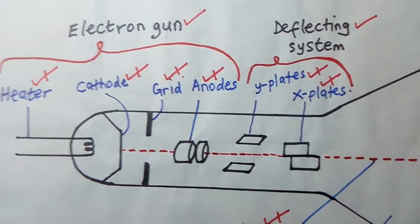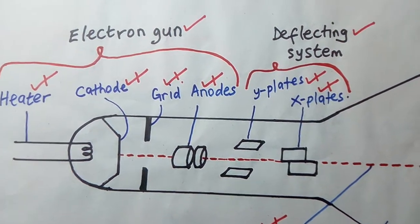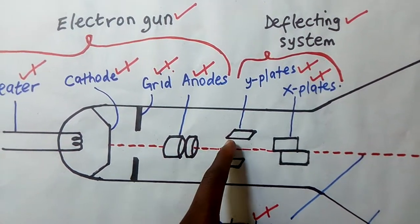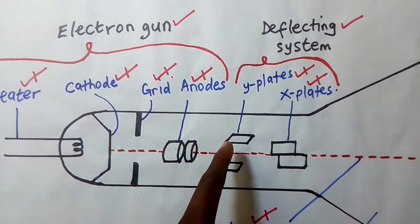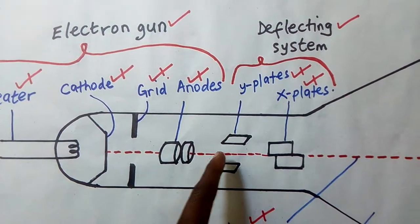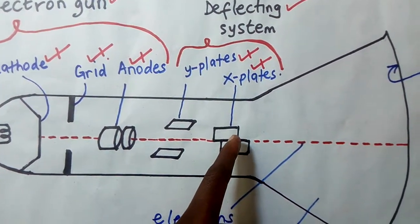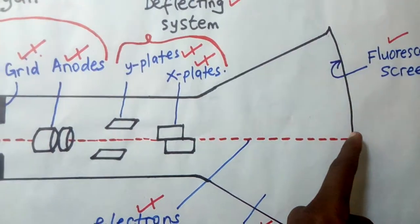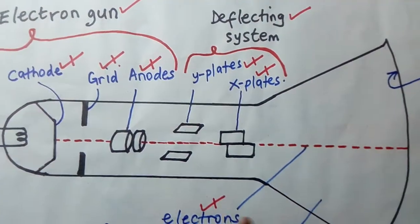When electrons move at a high speed you call them cathode rays. From there they go to the Y plates. The Y plates deflect these electrons vertically. The X plates deflect them horizontally until they go to the fluorescent screen. This is briefly how this machine works.